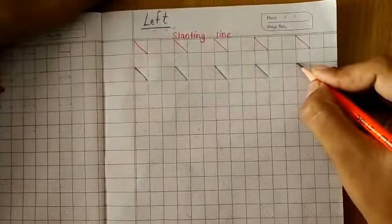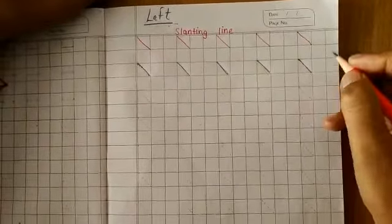Trace dots from top to bottom. It's slanting line. In this way you will do your full page of slanting line.